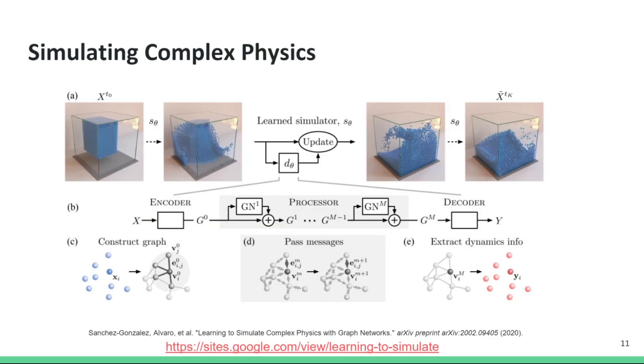Yet another interesting application of machine learning models applied to graphs is simulating complex physics. In this example, a graph neural network is used to simulate liquid sloshing in a container. In short, the liquid is first modeled as a set of particles. A graph representation of these particles is then constructed, where the edges link nearby particles. The constructed graph is passed into a graph neural network, which predicts the positions of the particles in the next time step. And this process is repeated until the simulation is over.